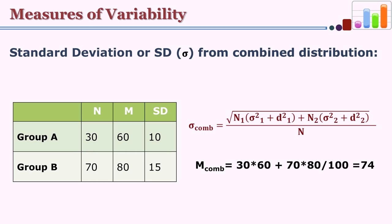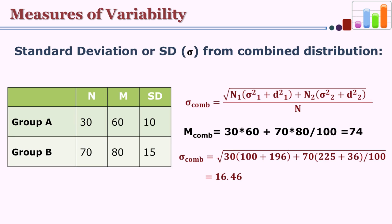First we find the combined mean. For group 1: 30 multiplied by 60 gives total scores of 1800. For group 2: 70 multiplied by 80 gives 5600. Total score is 1800 plus 5600 equals 7400, divided by combined n of 100 (30 plus 70), giving a combined mean of 74. Now we can find d₁ = 74 minus 60 = 14, and d₂ = 80 minus 74 = 6.